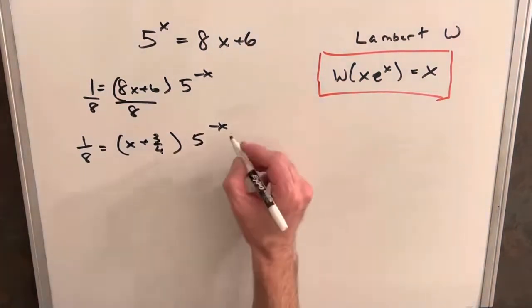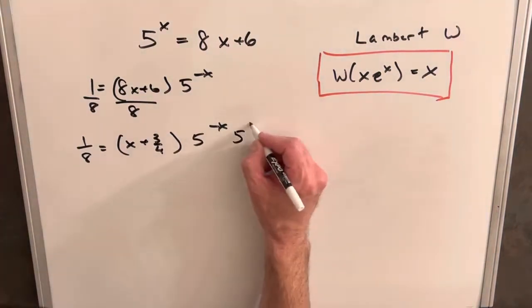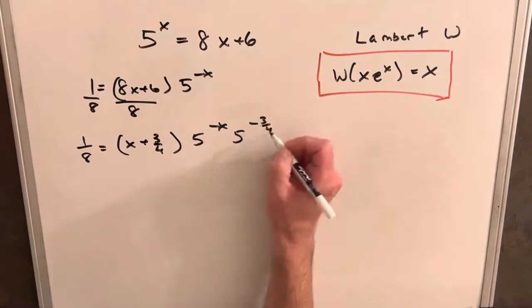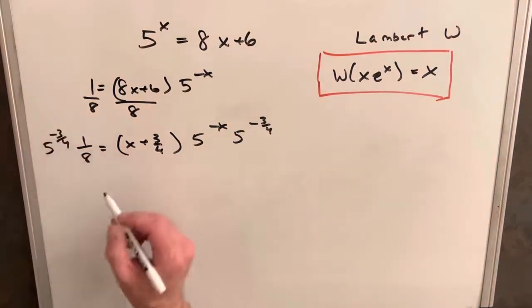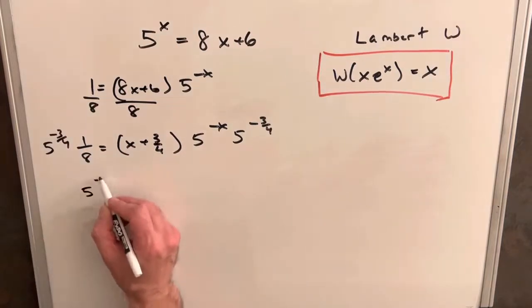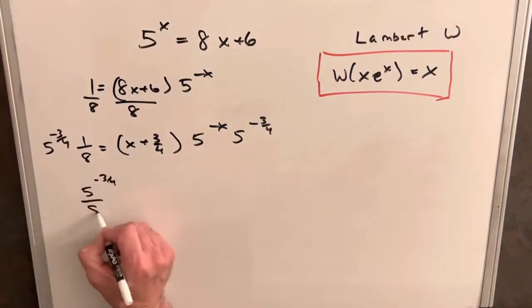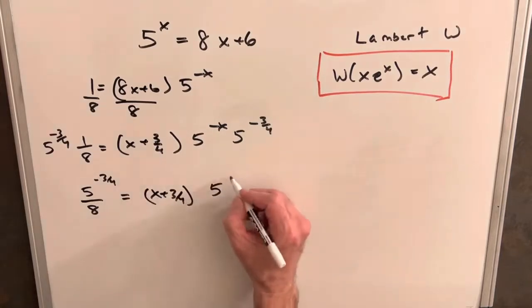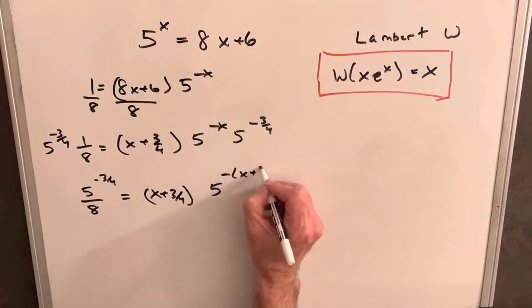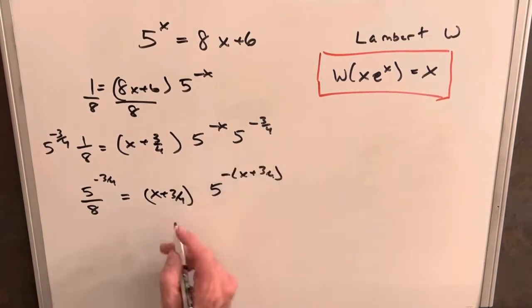And then again, trying to match this coefficient, what if I multiply times 5 to the negative 3 fourths here, and do the same thing on the left side. And then let's see what happens, we'll have 5 to the minus 3 fourths over 8, and here we'll have x plus 3 fourths and 5. You know what I'm going to do, I'm going to pull a minus out, and we'll write this as x plus 3 fourths, so then now we actually have a match here.